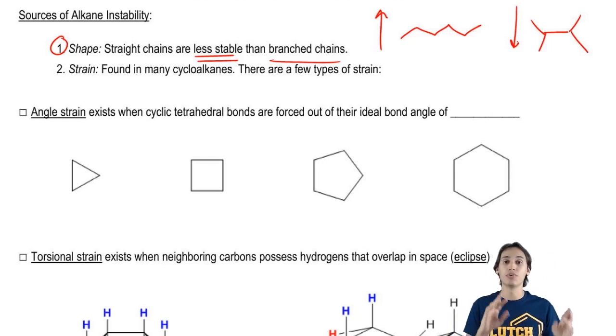Why? Because the branch chain is going to be more stable, the straight chain is going to be less stable. So that's just something you should know. The second thing is strain. There's actually a lot of different types of strain. I'm going to talk about two right now, but there's actually even more than that.